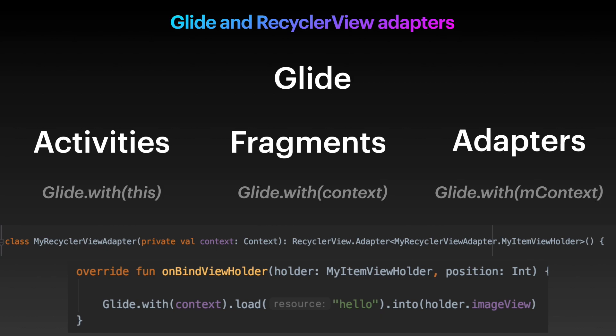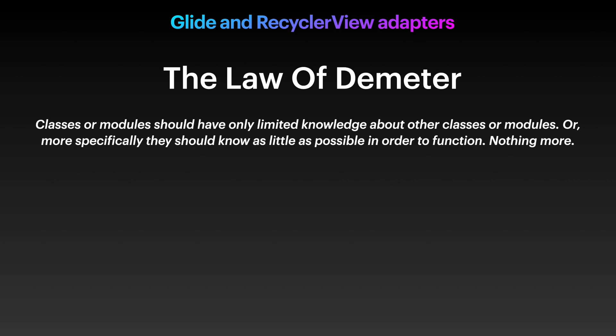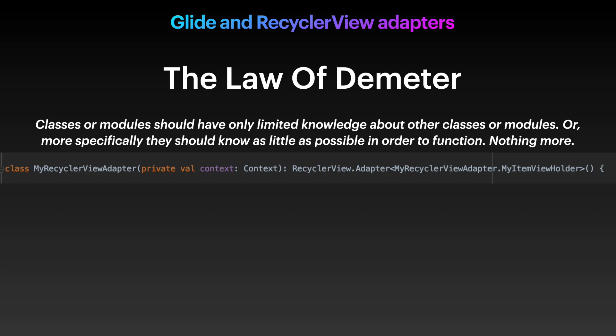To begin understanding where the problem is, we have to talk about something called the Law of Demeter. Yeah, I know — another cool term in our lives. The Law of Demeter, also known as the Principle of Least Knowledge, basically states that classes or modules should have only limited knowledge about other classes or modules. More specifically, they should know as little as possible in order to function — nothing more. The less a class knows, the fewer side effects it's going to have and the more you will be able to control the functionality. So let's see it in the example of passing context to our RecyclerView adapter. By passing context, we have just given our adapter the keys to almost everything in the Android world, since context is a god class.